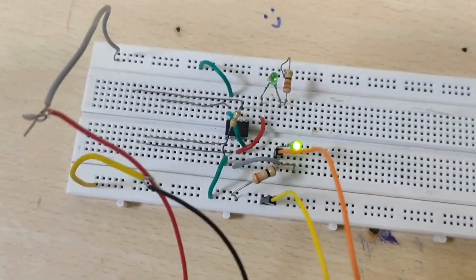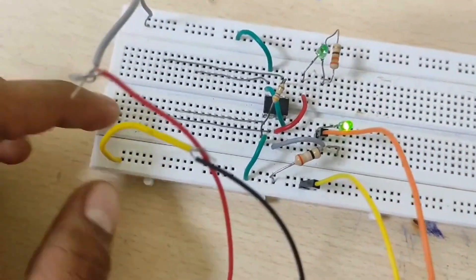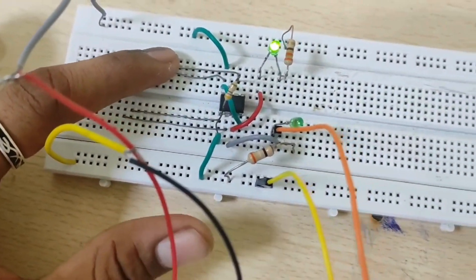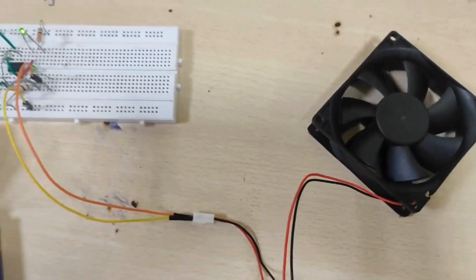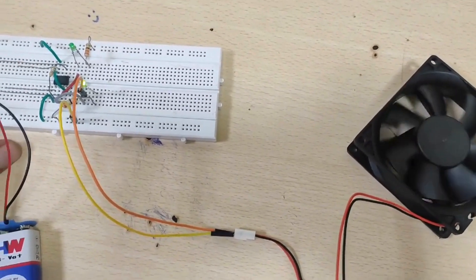The components we have used are a 555 timer IC, 1 or 2 LEDs, 10M resistors, a breadboard, some wires to connect, a 5 to 10V power supply, and you can also use a 5V DC fan.